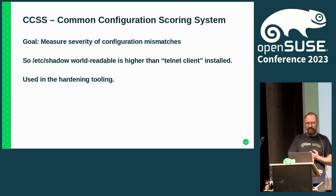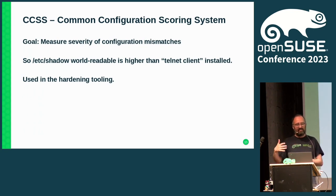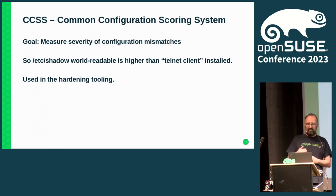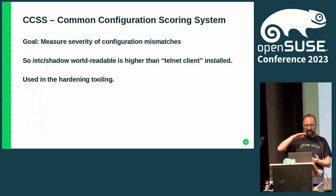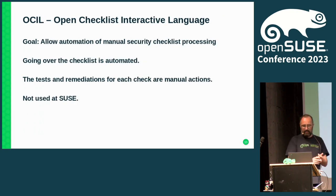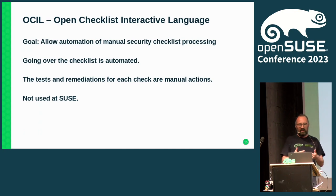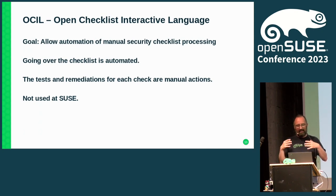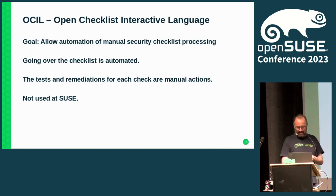Common Configuration Scoring System — that's actually the first time I heard about this when preparing this talk. It measures the severity of configuration mismatches, like whether /etc/shadow is world-readable being much more severe than just having a Telnet client installed. It's used in hardening tooling to differentiate severity and prioritize what you need to fix. Part of that is also OCIL — Open Checklist Interactive Language — where a checklist is generated from automation data and tests and remediations are manual actions. That is kind of old school and we don't specifically need to use that.